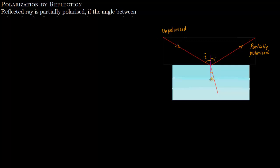You have the angle of refraction here and the angle of incidence here. Now if the angle between the reflected ray and the refracted ray is 90 degrees, then this reflected ray becomes completely polarized.